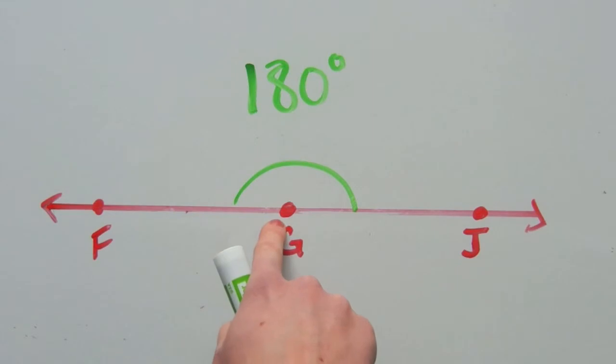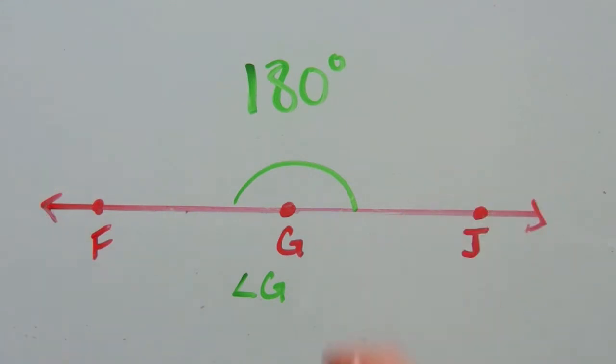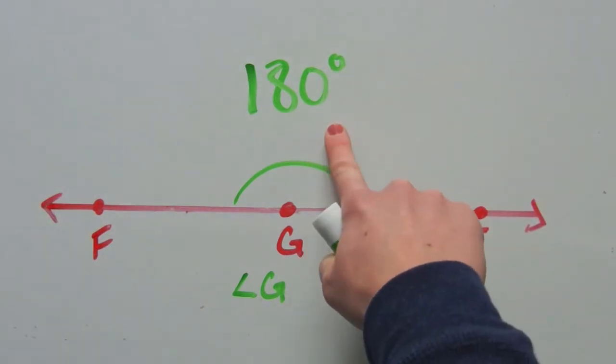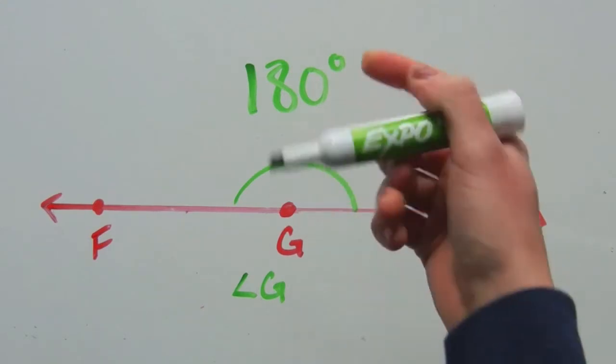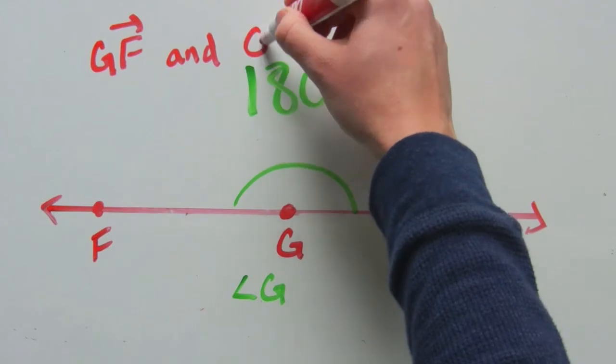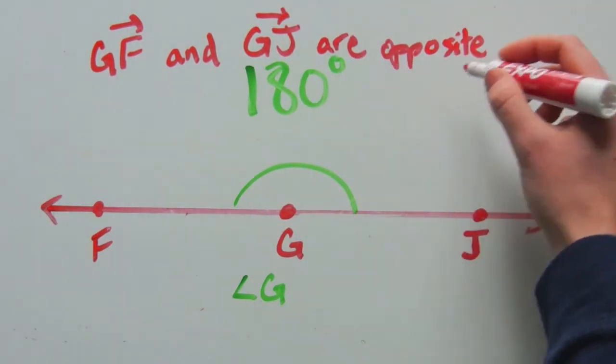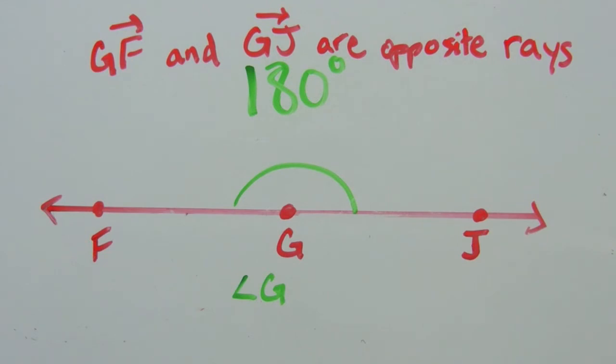But G to J goes the opposite way of G to F. So they are known as opposite rays. And opposite rays always have a measurement of 180 degrees. So rays G to F and ray G to J are opposite rays.